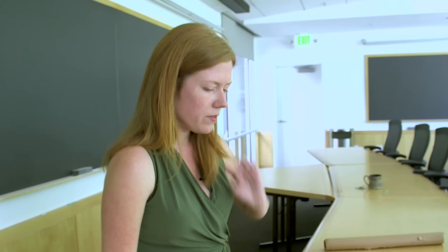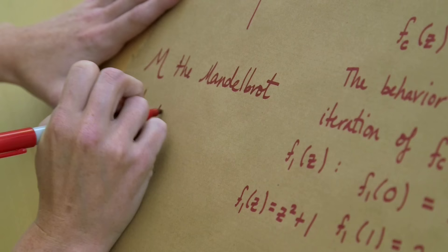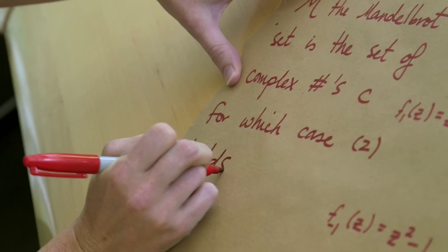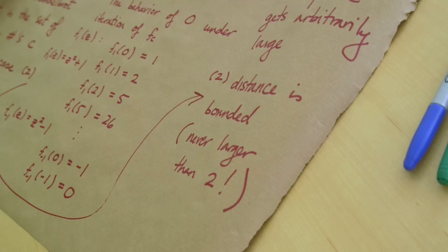The definition of the Mandelbrot set, which we usually call M, is the set of C, complex numbers C, for which case two holds. Let's be clear, case two. In other words, if I look at the function represented by this complex number.